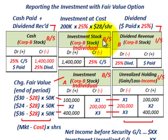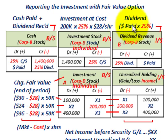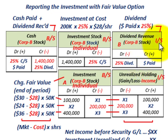If there's any dividend received — if Corp B issues cash dividends — it would be recorded on the income statement based on the percentage ownership. Corp A invested 25%, so whatever dividend was paid by Corp B, Corp A gets 25% of that, and they record it as dividend revenue, credited as dividend revenue on the income statement, while debiting or increasing the cash account for that dividend.